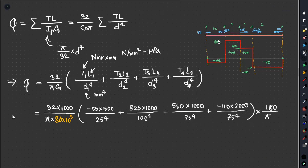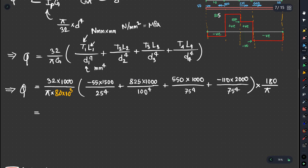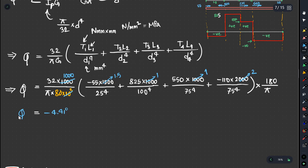We change the units to be consistent, aiming for the angle of twist in radians. Going to the calculator, we multiply and sum the terms. The small equation gives 1.5 combined with the other segments. Ultimately, the angle of twist is 4.41 degrees.